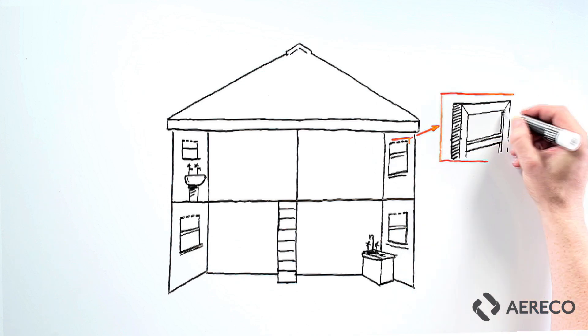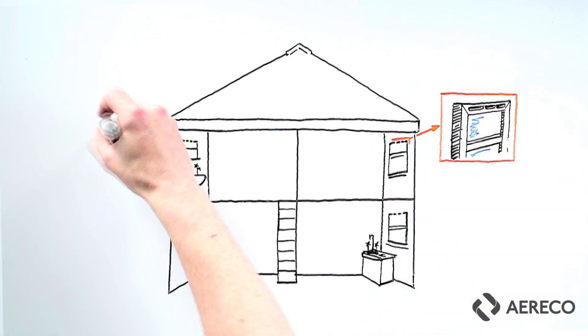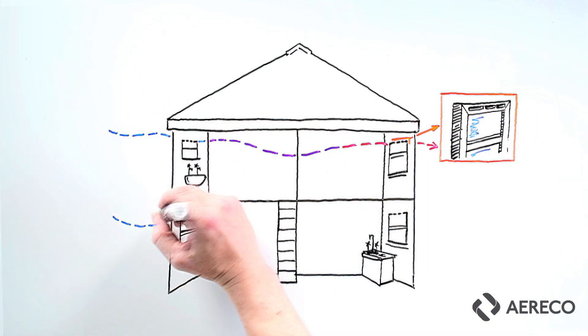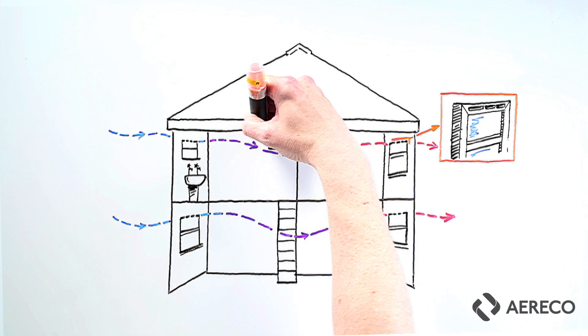The idea is we allow air to move into, through, and out of the house naturally because of the wind outside. This process is called cross ventilation.